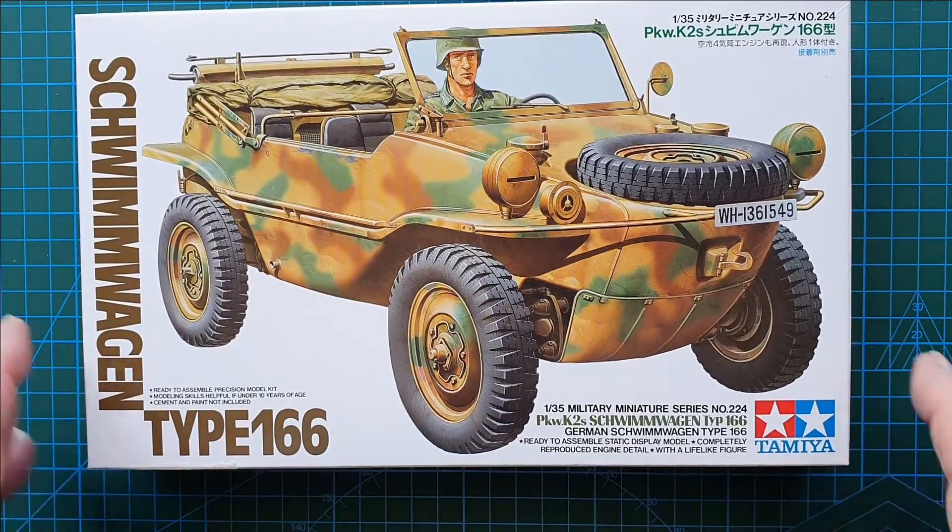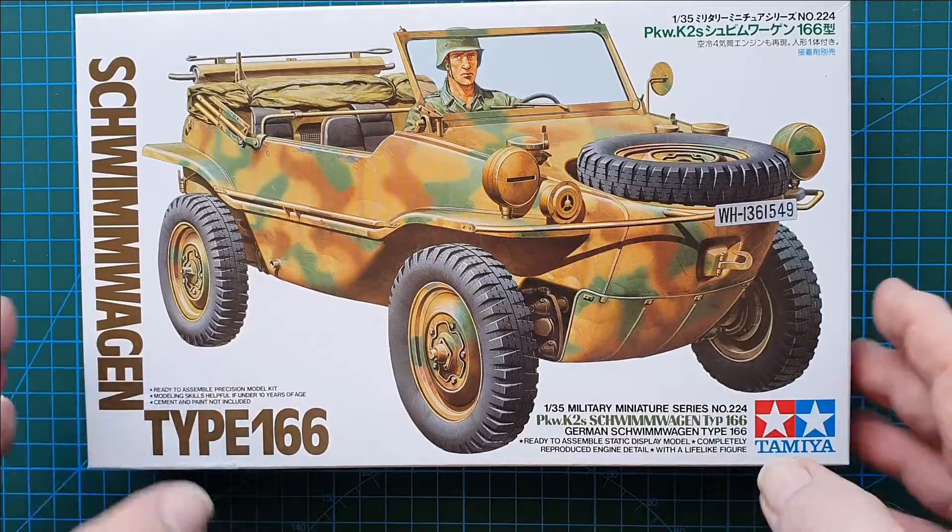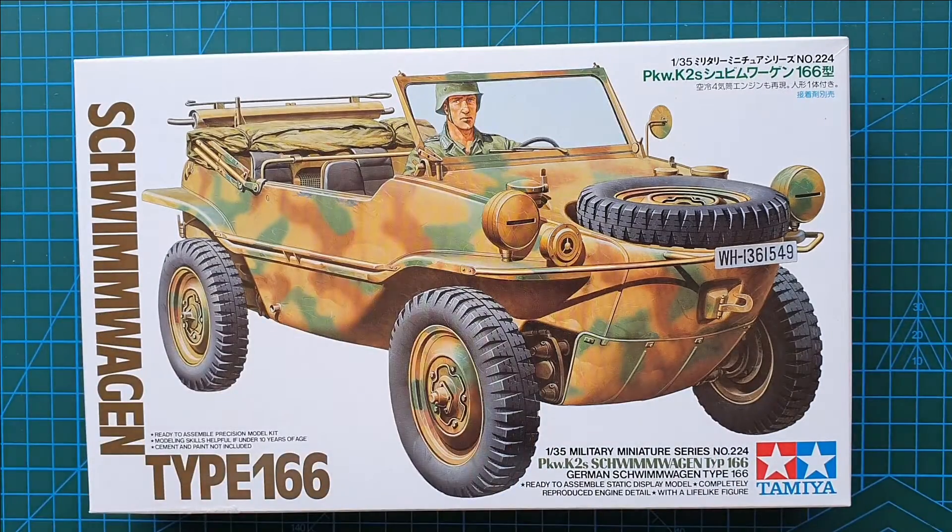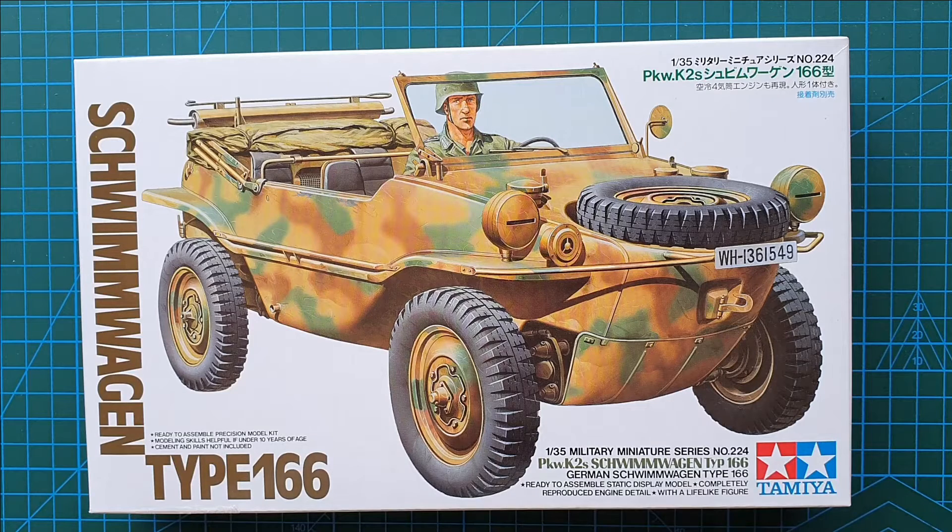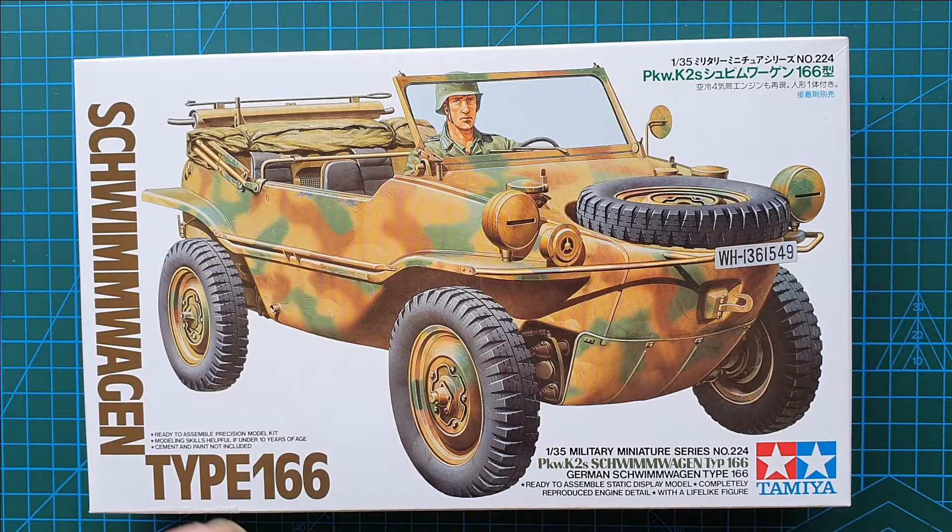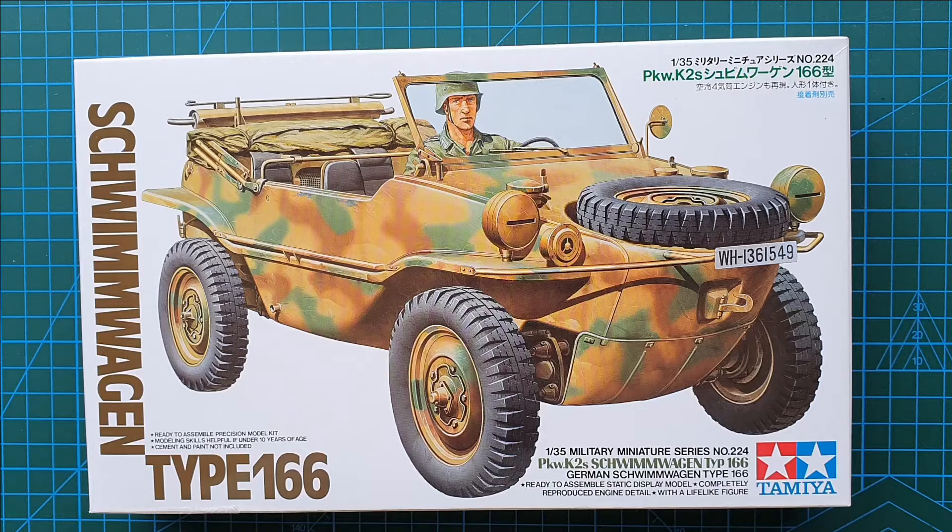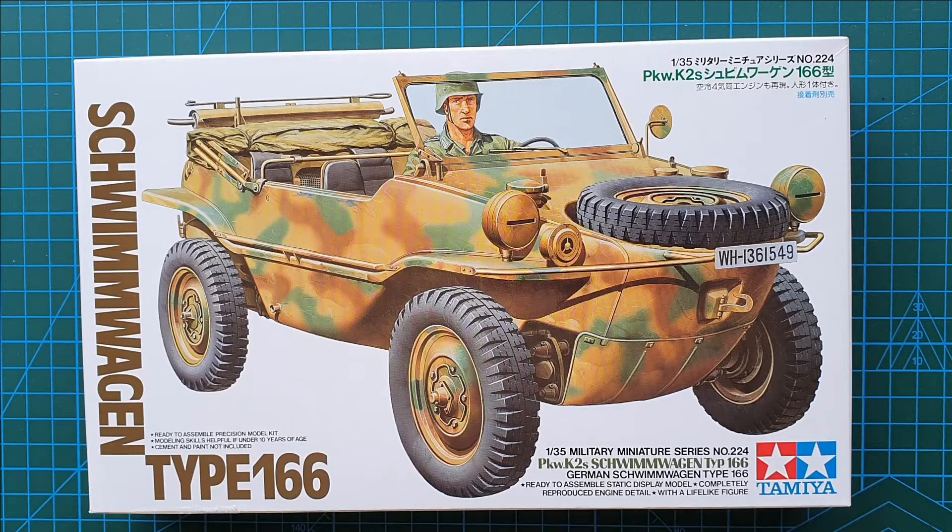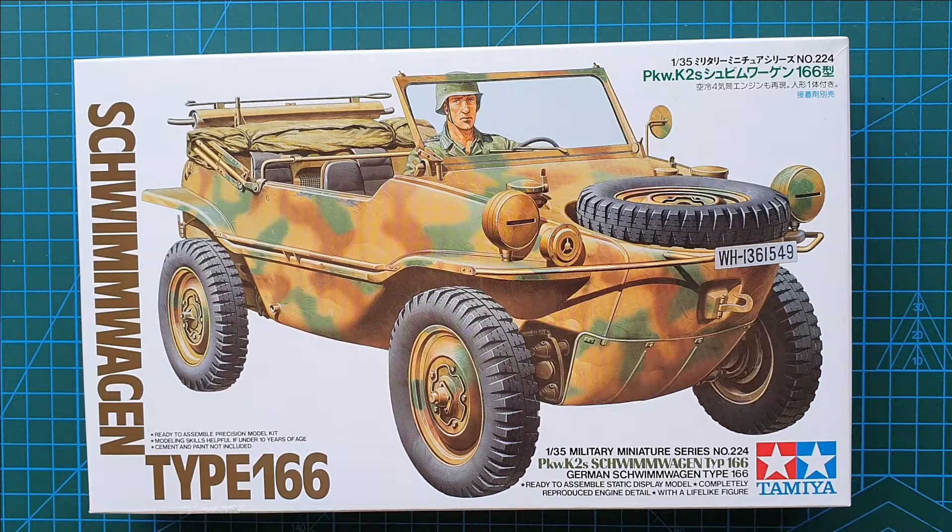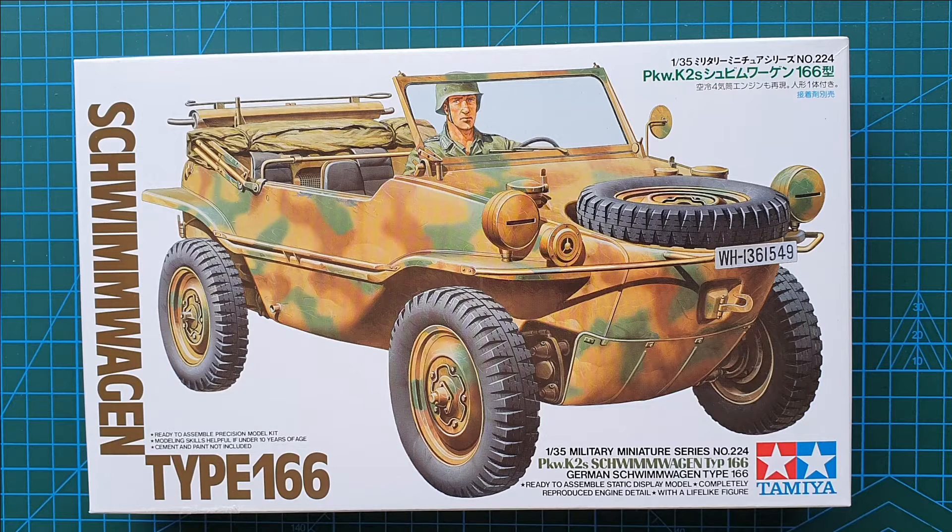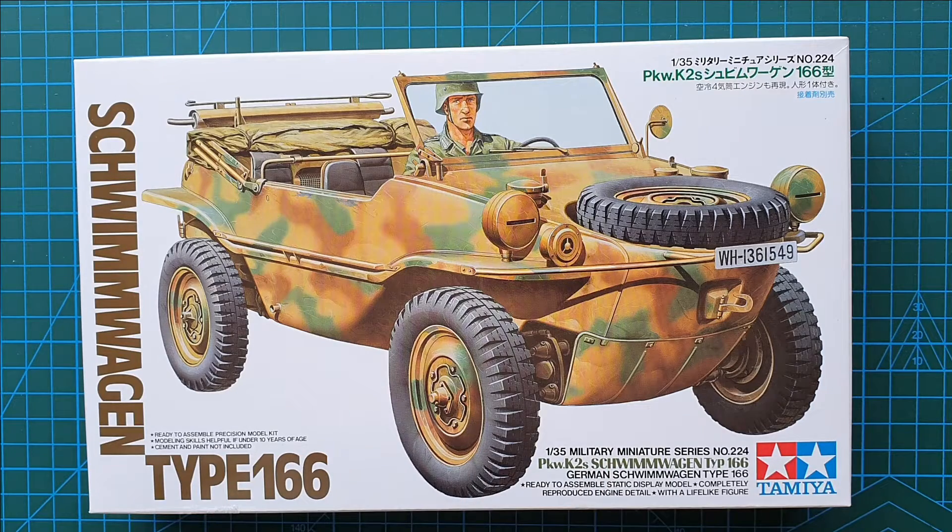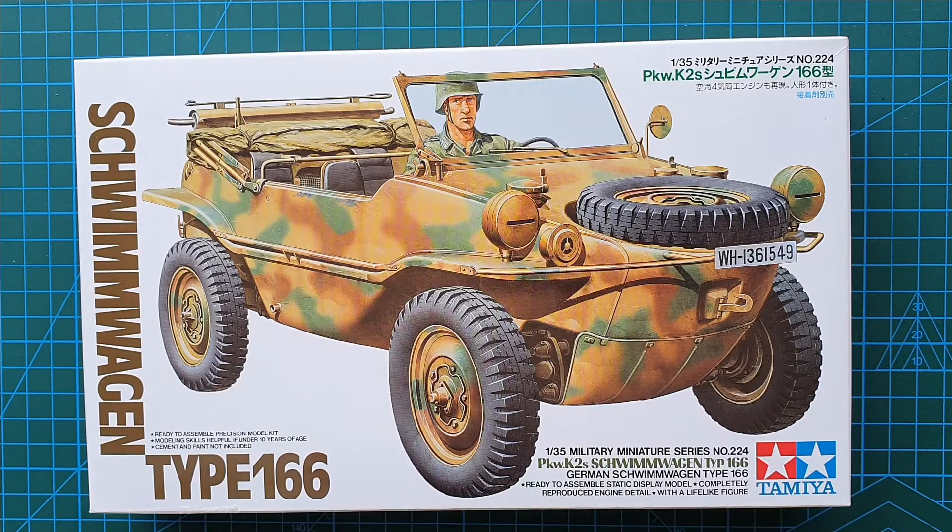Okay, so as you can see classic Tamiya color art of the actual vehicle. You do get a driver figure with this, and you do actually get an engine with this Schwimmwagen. This kit, the kit number is 35224 and came out in 1998. It's a completely new tooling for the Schwimmwagen from Tamiya.